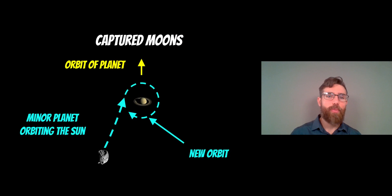Now, captured moons, you need to have a smaller object, so a minor planet, a dwarf planet, asteroid, and it will be orbiting the sun. And it will get close enough to another planet that it gets gravitationally captured and it ends up on a new orbit.